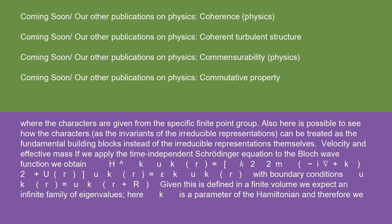Velocity and effective mass. If we apply the time-independent Schrodinger equation to the Bloch wave function, we obtain H_k u_k(r) = [(-iħ∇ + ħk)²/2m + U(r)] u_k(r) = ε_k u_k(r), with boundary conditions u_k(r) = u_k(r+R). Given this is defined in a finite volume, we expect an infinite family of eigenvalues.